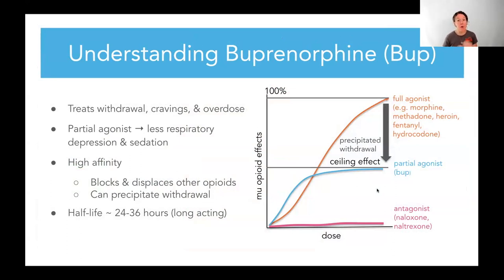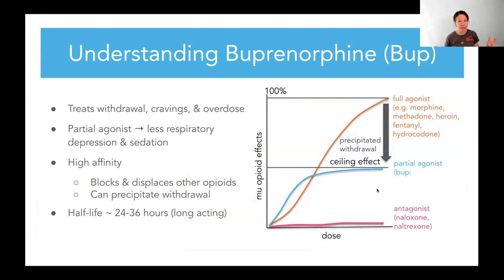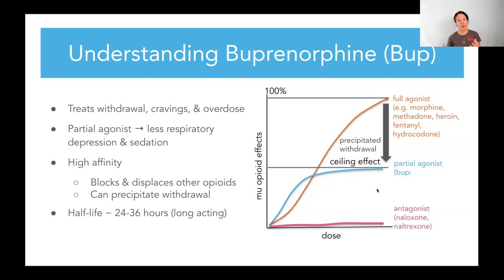There are things about buprenorphine that we really love, especially for those of us in the emergency department and in the acute care setting. As a partial agonist, it actually has a ceiling on respiratory depression. Since bup alone doesn't turn that receptor all the way on, you can't really overdose on bup alone. You could mix it with alcohol and benzodiazepines and potentially overdose, but this medication by itself has a ceiling on respiratory depression — without a ceiling on therapeutic effects to treat withdrawal, pain, and cravings. You can go very high on buprenorphine dosing without causing overdose from that medication.